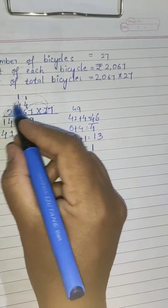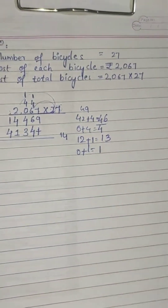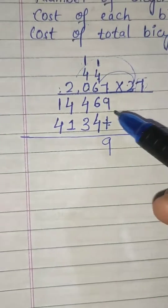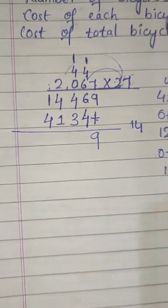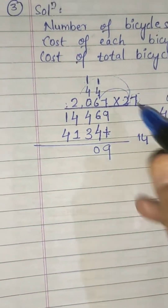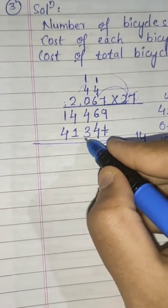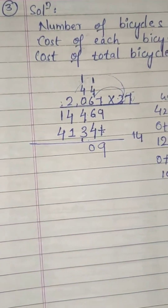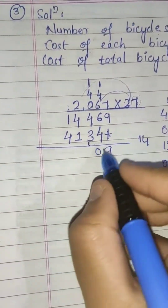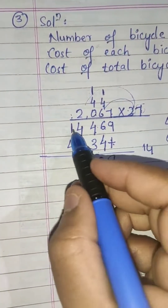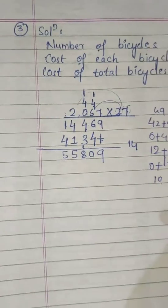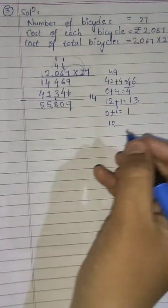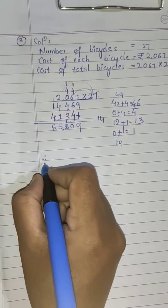No more digits to multiply, so add all the partial products: 9; 6 plus 4 is 10 — write 0 and carry 1; 4 plus 3 is 7, plus carry 1 is 8; 4 plus 1 is 5; 1 plus 4 is 5. The answer is 55,809.